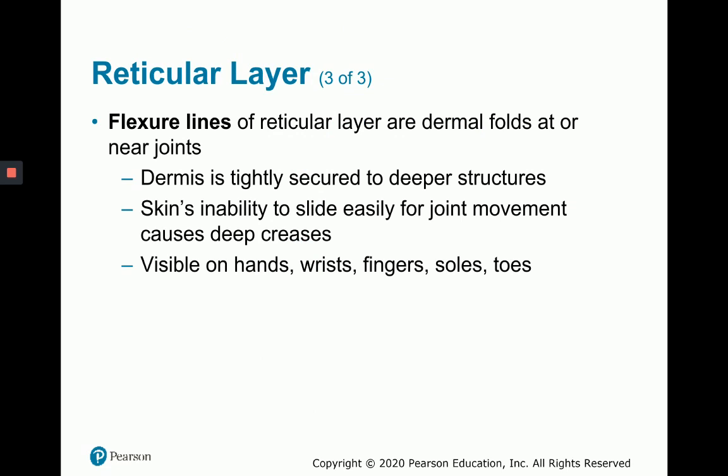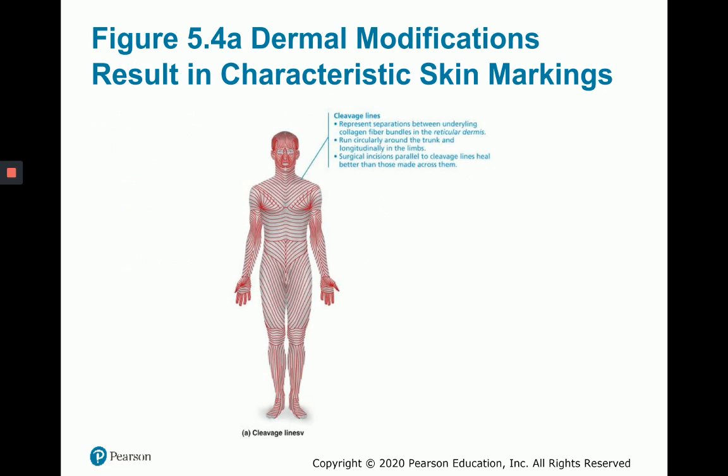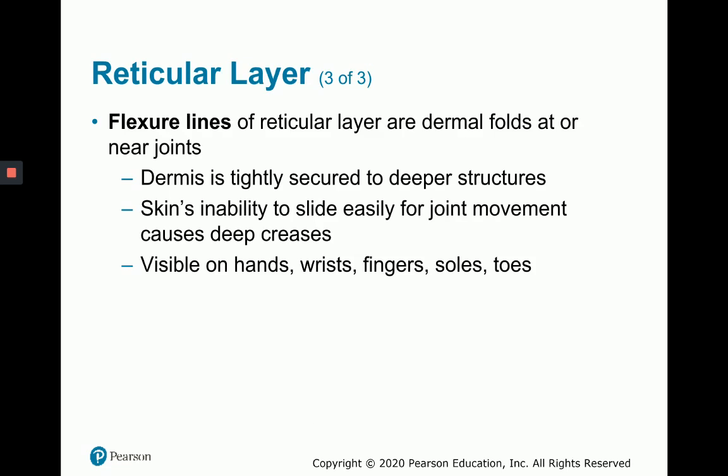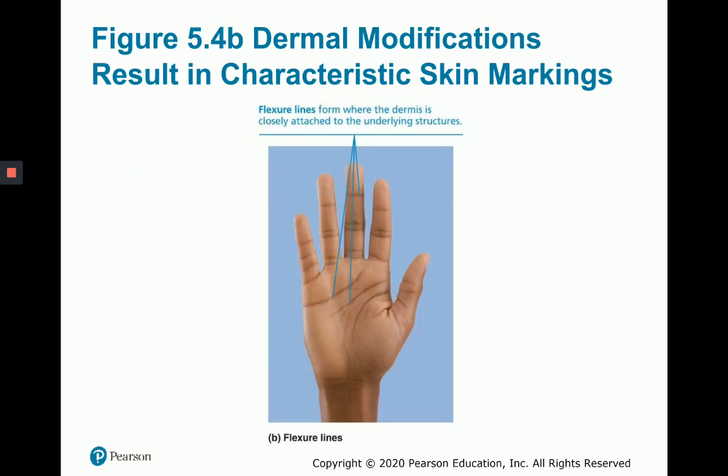Flexural lines of the reticular layer are dermal folds at or near joints — areas where the dermis is tightly secured to deeper structures. This allows joints to move without the skin sliding past, but causes deep creases visible through the epidermis. Unlike cleavage lines, you can actually see flexural lines, for example on your hands, wrists, fingers, soles, and toes.